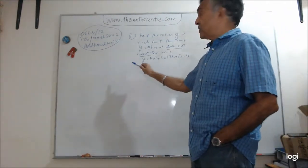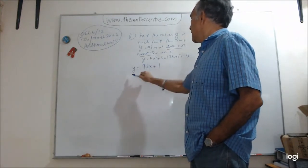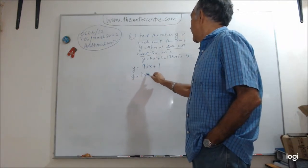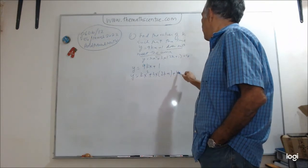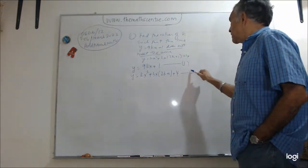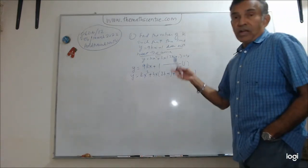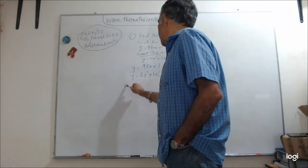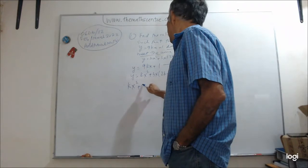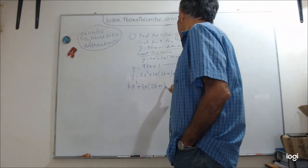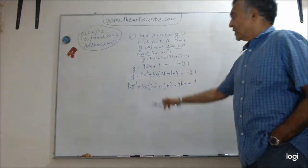So you start with simultaneous equations. So you write in your solution y equals 9kx plus 1 and y equals kx squared plus 3x, 2k plus 1 plus 4. So label this equation 1 and label this equation 2. Copy everything correctly. Great.